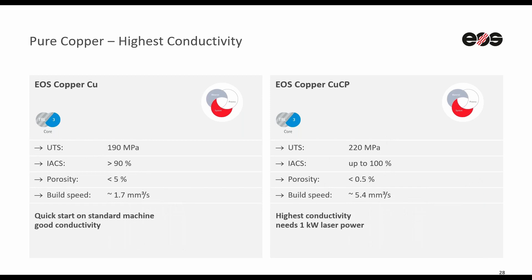Here we can look at this a bit in numbers. With the standard M290 system, you can already get good conductivity — we are around 90% and a little bit above. But with less energy, we are left with a bit more porosity in the parts and the building speed is a little lower. However, you can also utilize certain post-processing to improve the performance. On the copper CUCP, there we are really getting the ultimate conductivity, around the 100% mark for electrical conductivity, and the microstructure is dense with low porosity and with a good build speed.